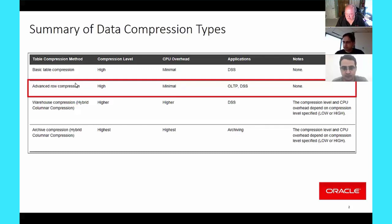The next question is: can you provide an overview of how and when update compression occurs with advanced row compression? The question that always comes up is: when I do an update, does the data get compressed right then, is there a delay, and how does that work? Without too deep of a dive, can you give an overview of what happens during an update or insert—whether things get compressed immediately or are delayed?